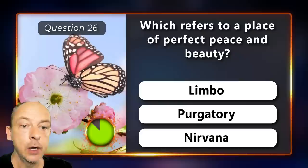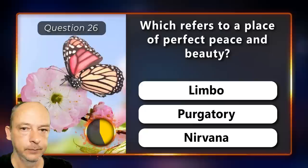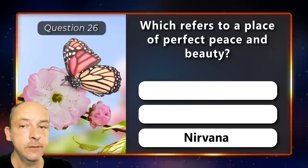Which refers to a place of perfect peace and beauty — limbo, purgatory, or nirvana? The correct answer is nirvana.